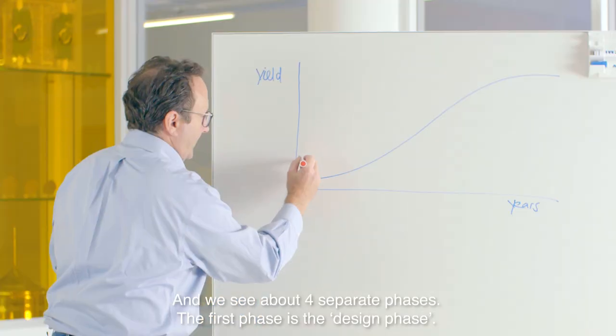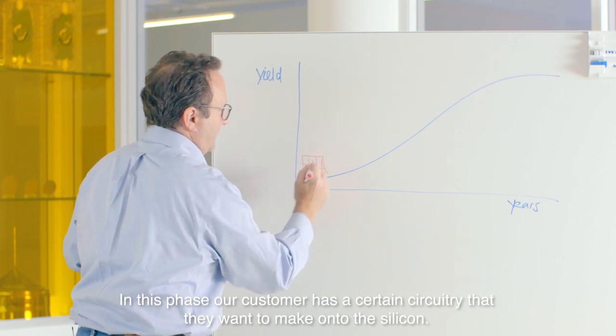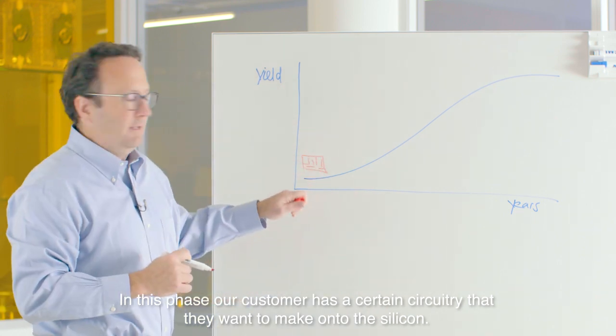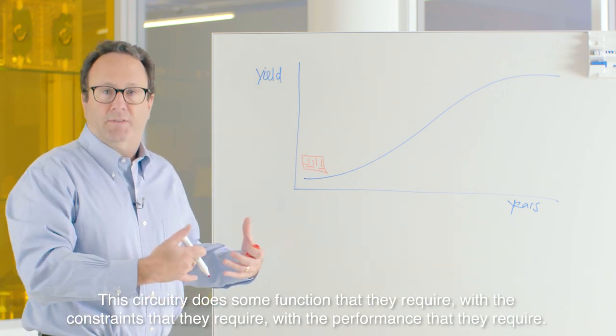The first phase is the design phase. In this phase, our customer has a certain circuitry that they want to make onto the silicon. This circuitry does some function that they require with the constraints and performance that they require.